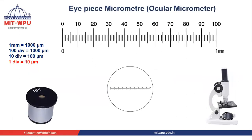Then we also need an eyepiece micrometer, also called an ocular micrometer. It is circular and fits into the eyepiece, which is placed on the microscope. If we enlarge it, it looks the same as the stage micrometer — 100 divisions, each equal to 10 micrometers. Depending on the lens being used, we need to calibrate the eyepiece micrometer.